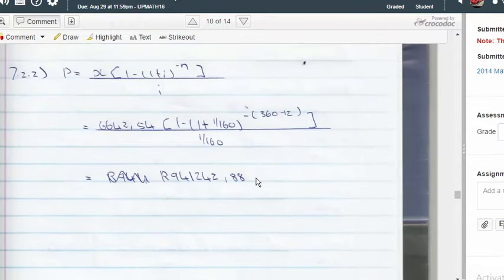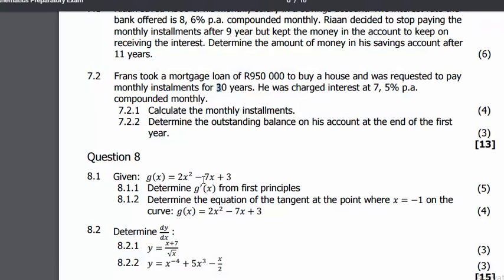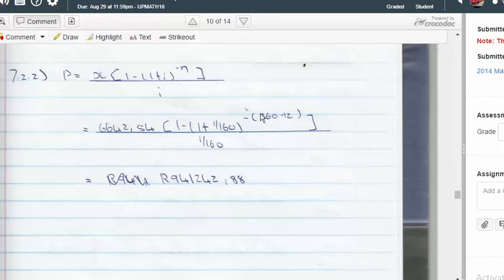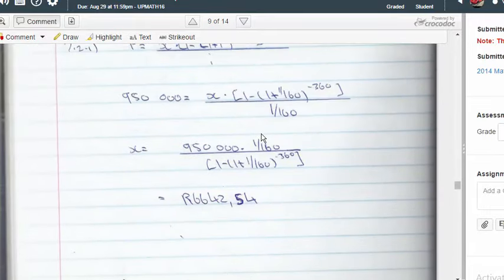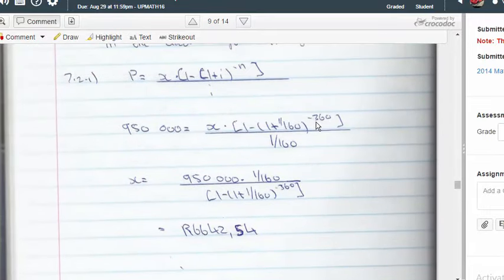Okay, question 7.2.2, here we go. The question is asking determine the outstanding balance on the loan at the end of the first year. So he's made one year of payment, which means, and remember in this formula, n represents how many payments are left.